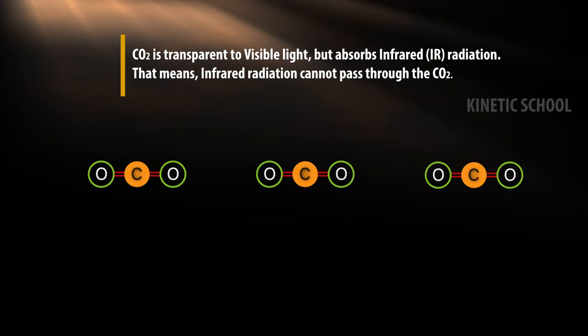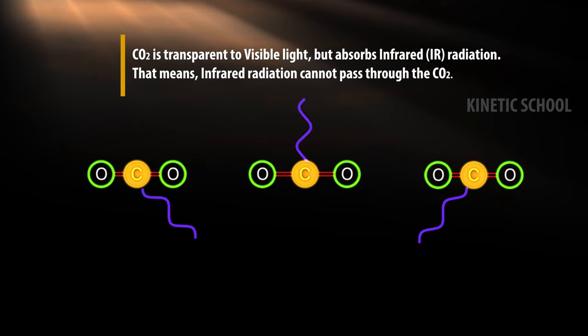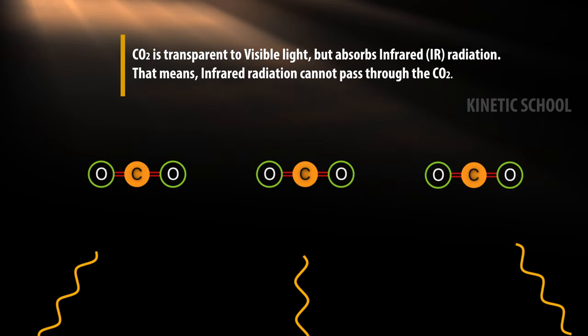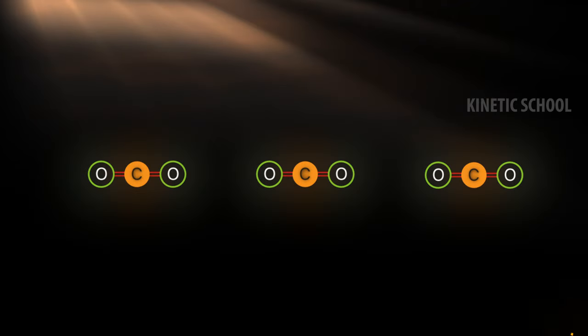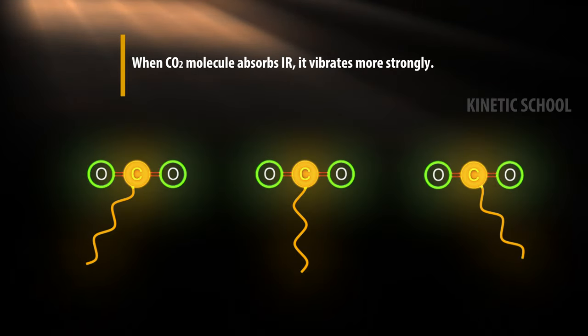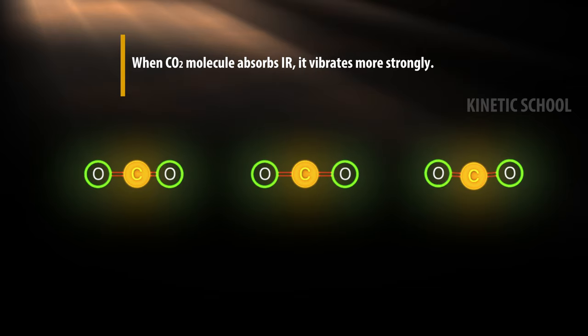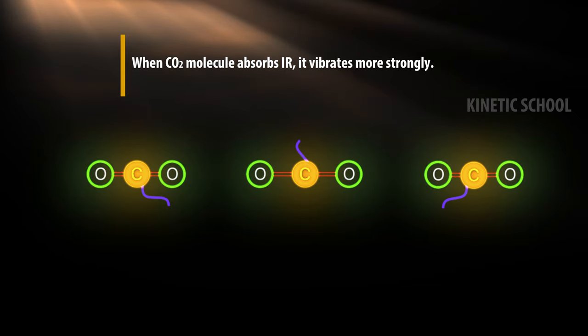Carbon dioxide is transparent to visible light but absorbs infrared radiation. That means infrared radiation cannot pass through the carbon dioxide. When carbon dioxide molecule absorbs infrared, it vibrates more strongly.